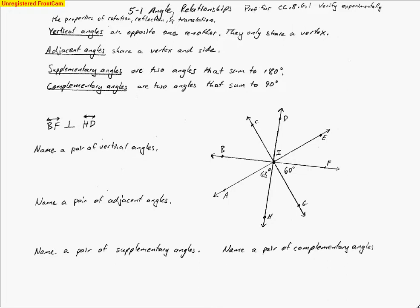This is a lesson for Chapter 5, Section 1: Angle Relationships. It's a topic we've talked about a little bit before, with some vocabulary we've seen in the past. We'll take a look at vertical angles.